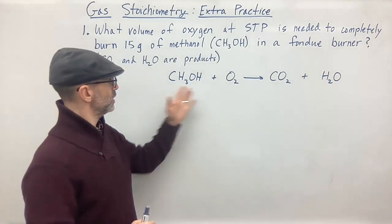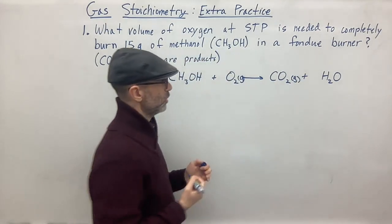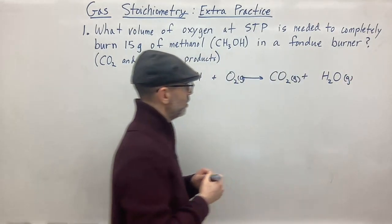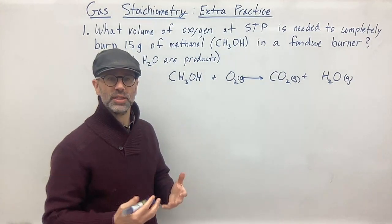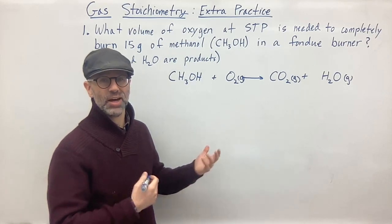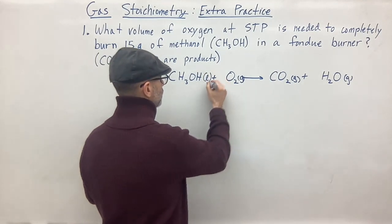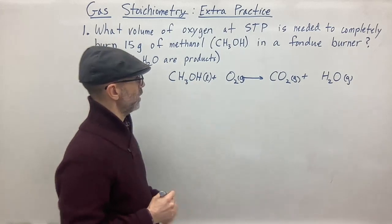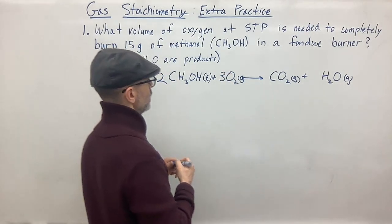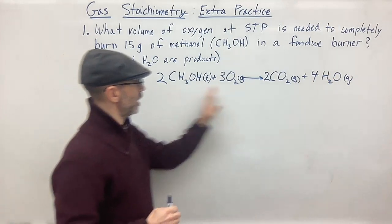If it's a complete combustion, then carbon dioxide and water are always going to be the products. So we have CO2 plus H2O. Let's put in some states: methanol is liquid, oxygen is gas, CO2 is gas, and water — since you're burning something and it's hot — any water formed would typically be water vapor, so gas. And we balance the equation: 3 O2, 2 CO2, and 4 H2O. So there's our balanced equation.